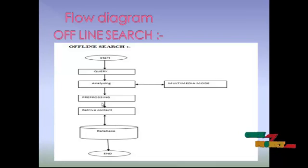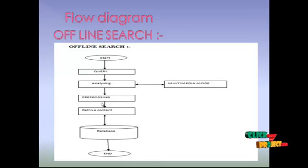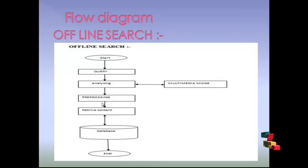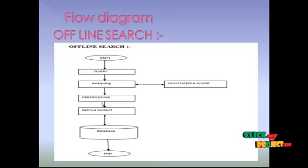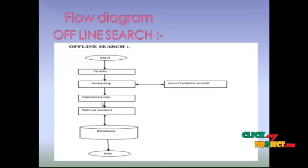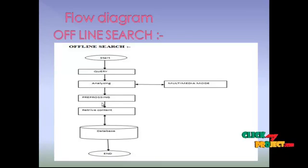Consider the query 'What is pen?' In this query, the key pattern is 'pen'. We are going to find the multimedia data regarding the key pattern 'pen', then find the description of the query, combine the description along with the multimedia data, and represent the complete information to the users. This is the offline search process.